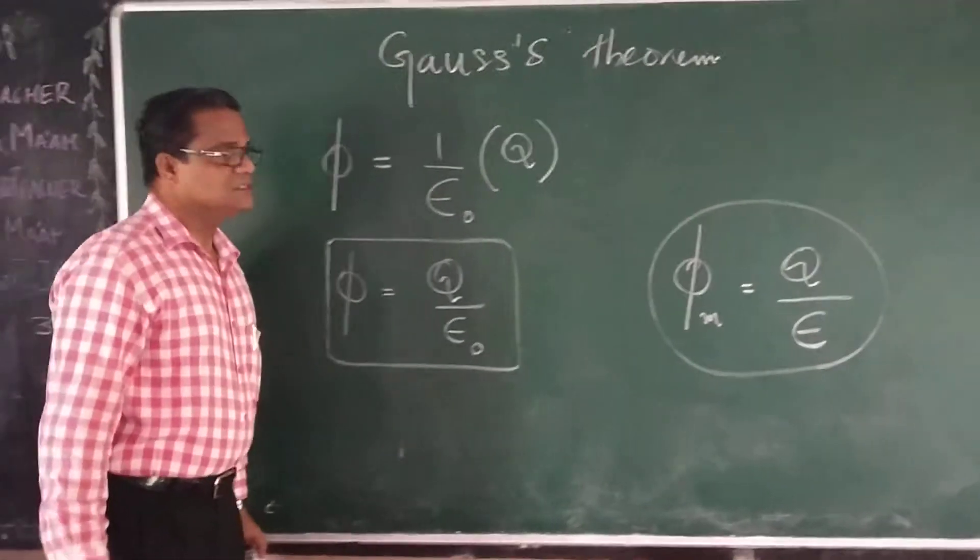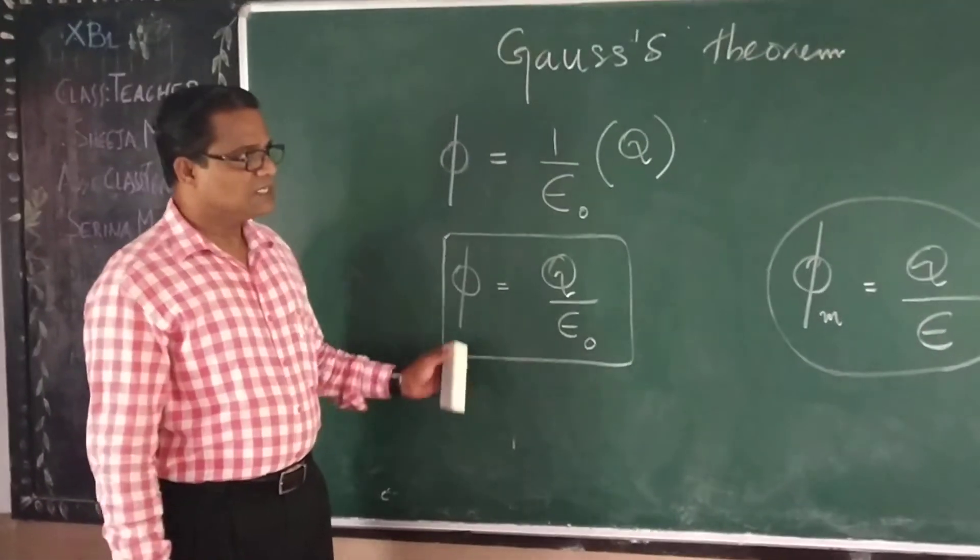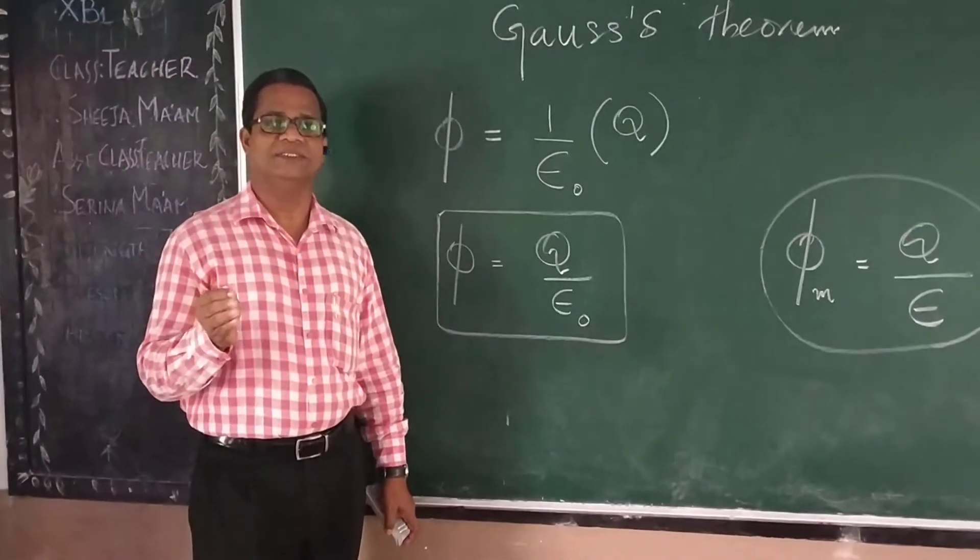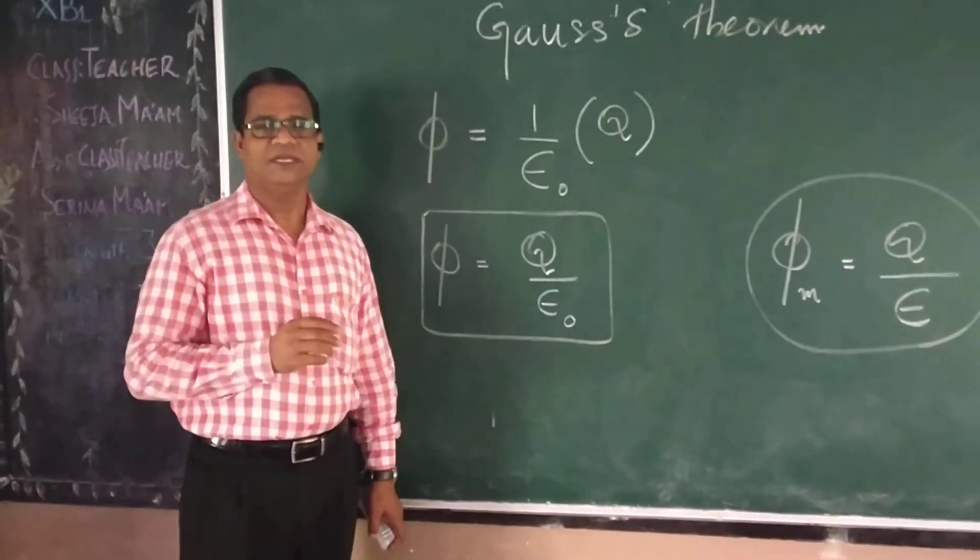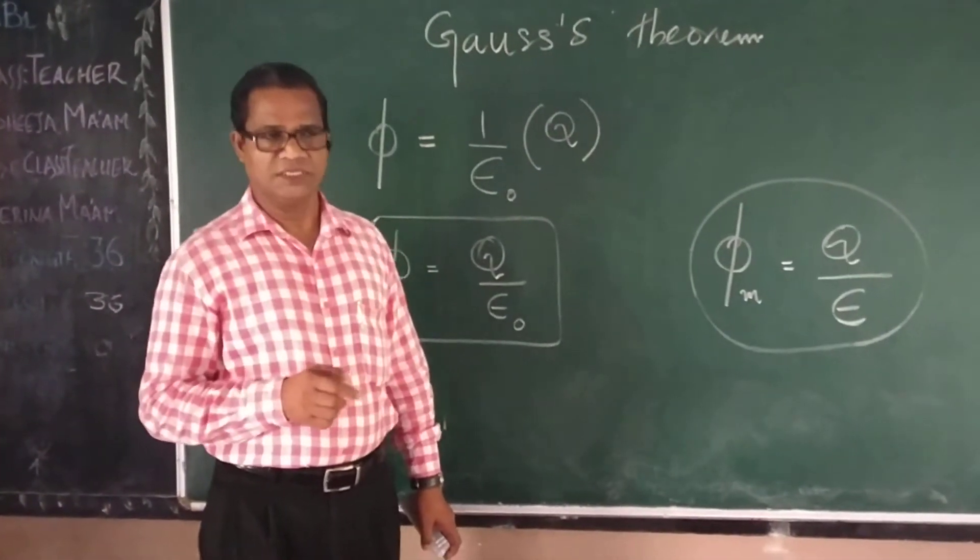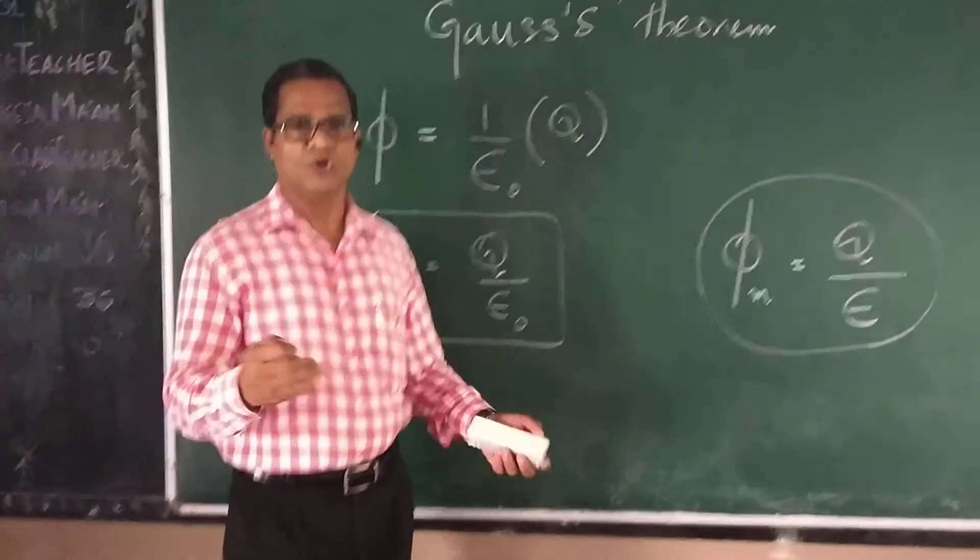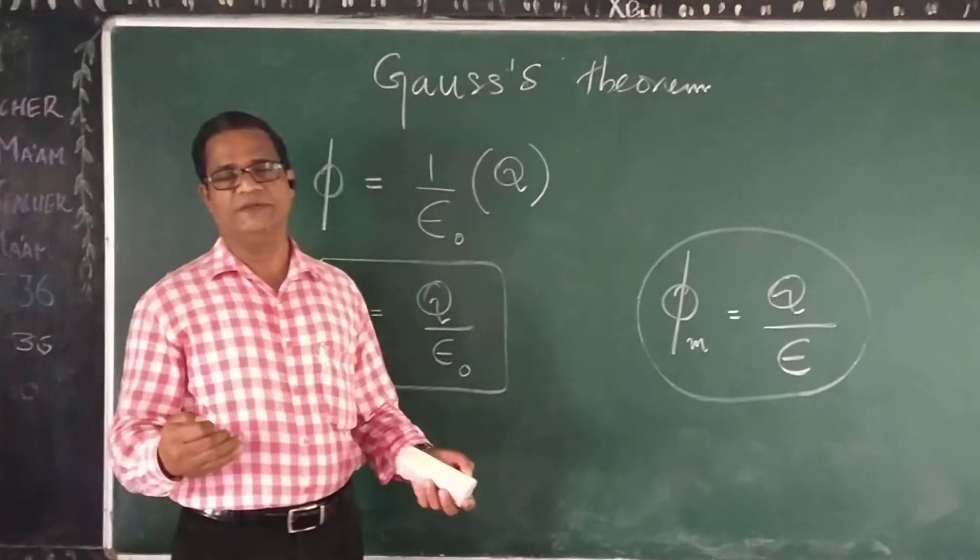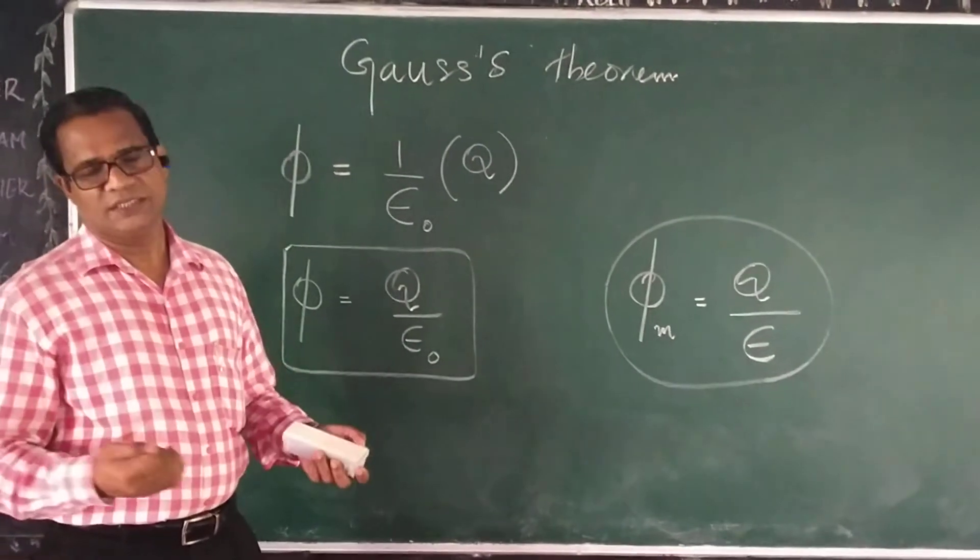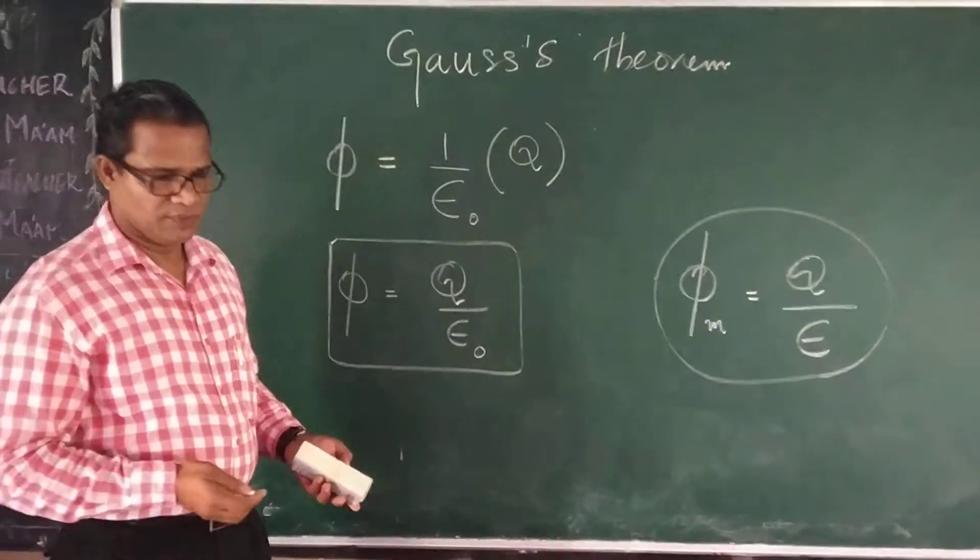In short, Gauss's theorem states that the charge we assume here is the total charge enclosed by the surface. We studied that charges are positive or negative in nature. Suppose we consider a group of charges having positive and negative charges together. Then we add all those charges to get the total charge. Let us see some examples.